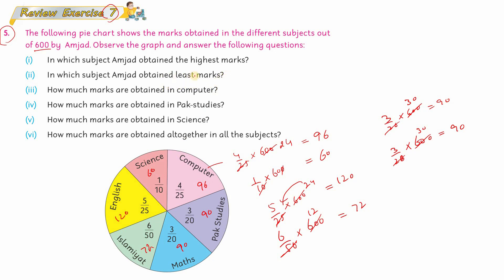Now that we have calculated all values, we can easily answer these questions. In which subject Amjad obtained highest marks? Look, the highest marks are 96, and that is in Computer. So the answer to the first question is Computer. In which subject Amjad obtained least marks? The least is in Science, which is 60, so write Science there.